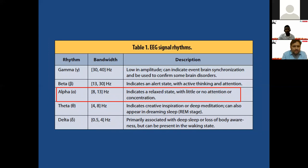Regarding EEG signal rhythms: in a normal adult in a relaxed state, we have alpha activity in the 8 to 13 Hz range. In an alert state with concentration, it may go to beta range, 13 to 30 Hz. When someone becomes drowsy or just about to go into deep sleep, it goes into theta. In children and some adults during deep sleep, we go to delta, where the activity is quite slow.